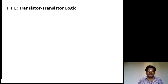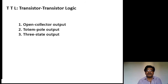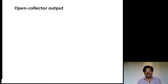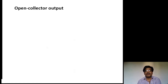There are three different configurations for TTL: open collector output, totem pole output, and three-state output. Coming to open collector output, the output terminal of the final transistor is in open mode. That is why it is called the open collector. Let us see the circuit for the two-input NAND gate.